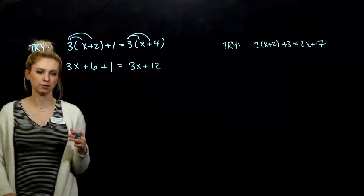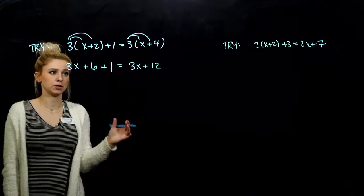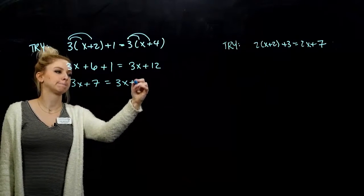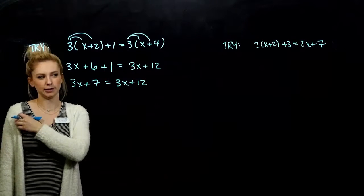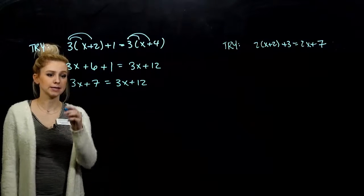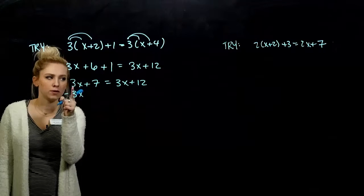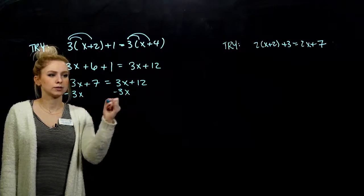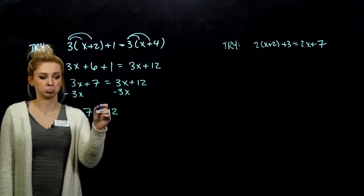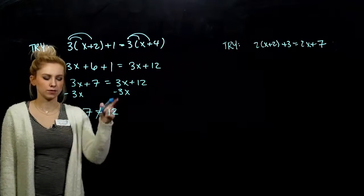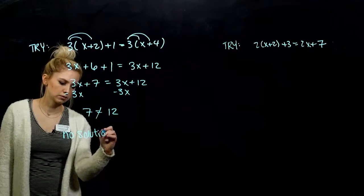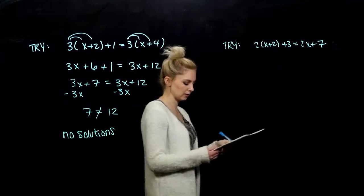Maybe you might be able to tell what's going to happen. But, let's just continue as if we don't. I'm going to combine my like terms on the left. I've got seven constants all together. And, you can see they don't match exactly. But, let's just continue as if we're trying to solve for x. I want to get my x's together. So, I'm going to move this one to the other side. Whatever I do to one side, I have to do to the other. So, I'm left with 7 equal to 12. That's never true. So, what about my solutions for this equation? I don't have any. No solutions. There's no number that I can plug in that will make that true.